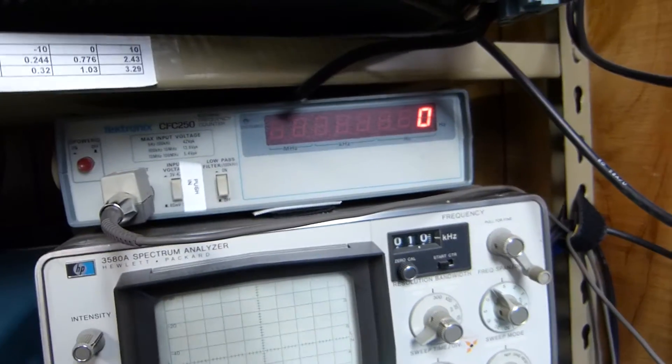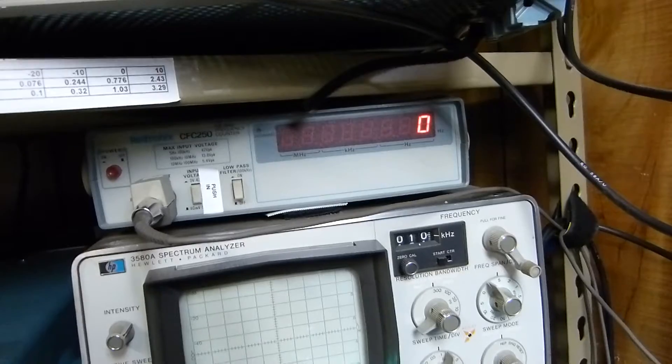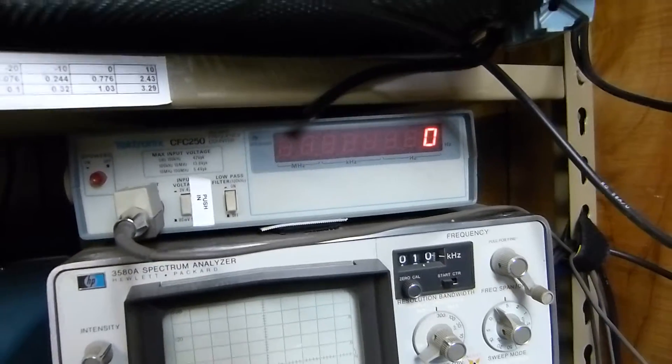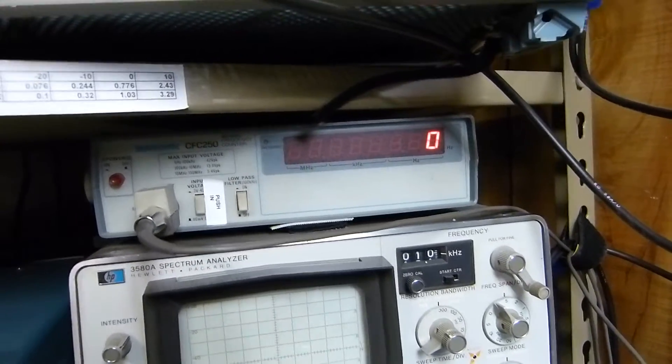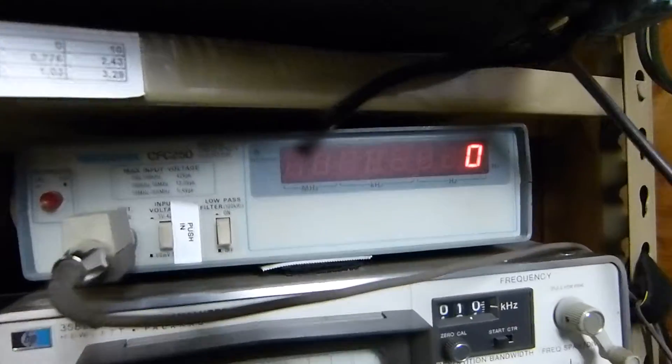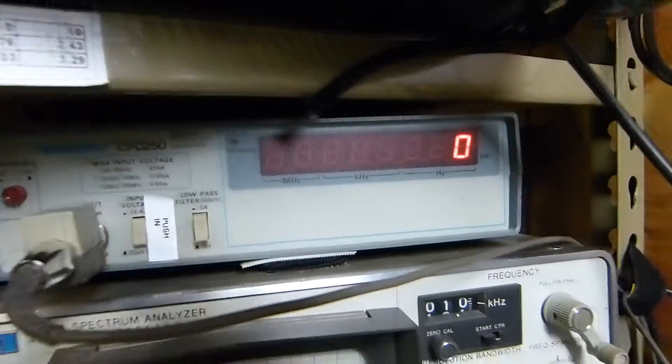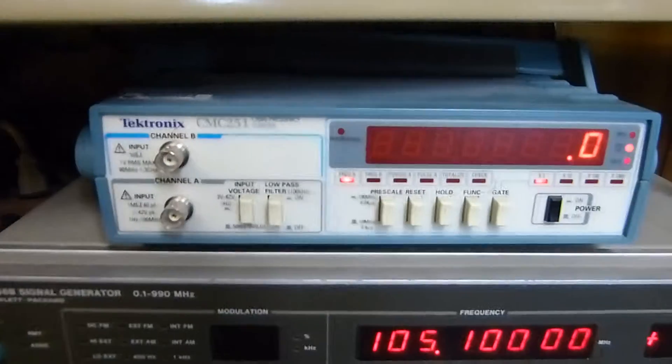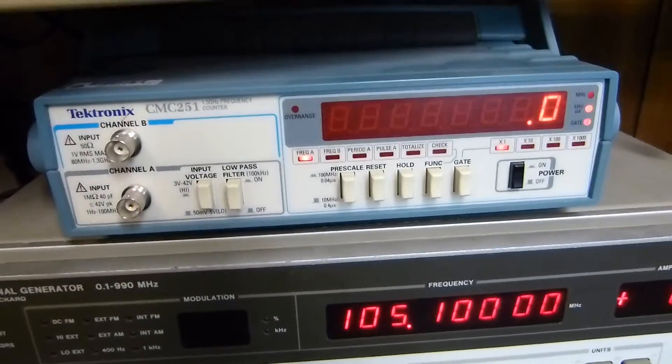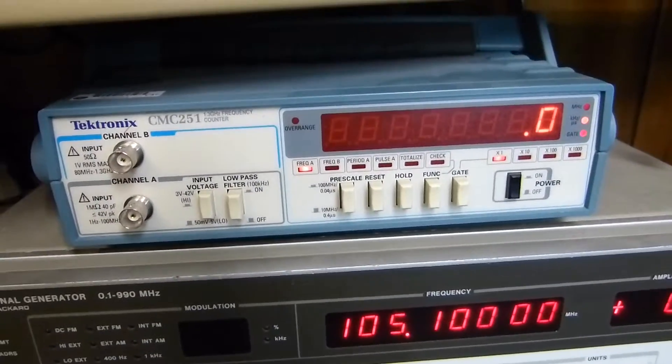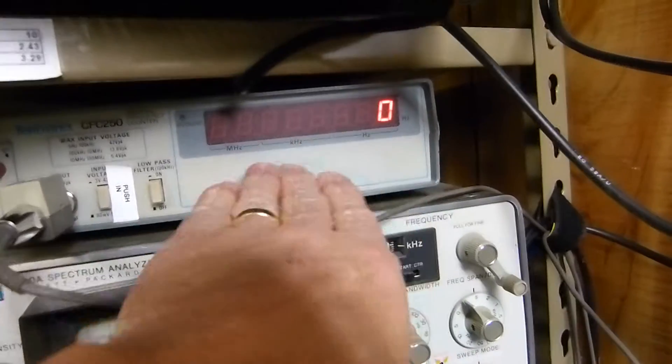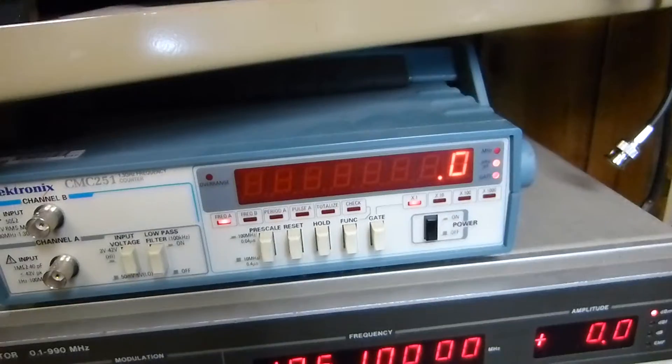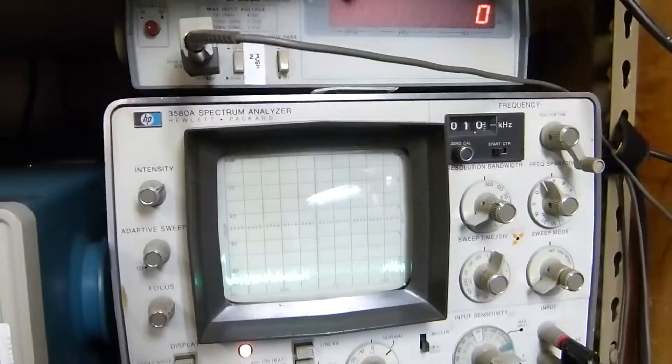This is simply a digital counter. They're really inexpensive on eBay. This is a CFC 250, I think its top frequency is 150 megahertz or 100 megahertz. Then they make one above that which is this one, which goes up to 1.3 gigahertz. I use this one for RF and this one for audio because it has a straight numerical readout.